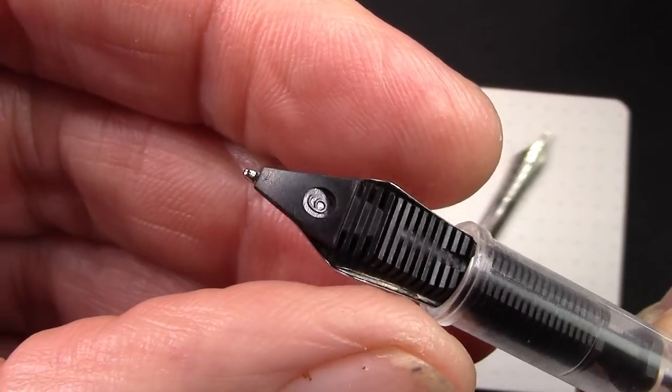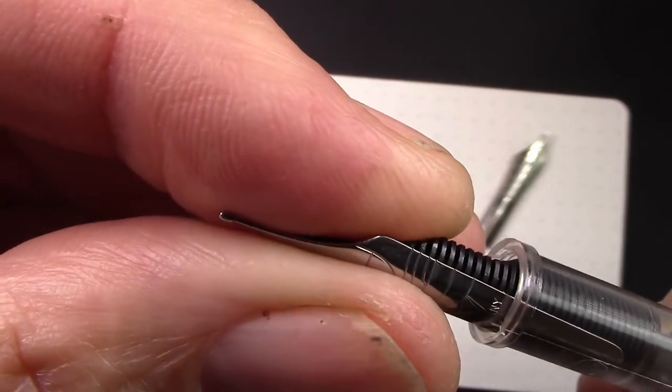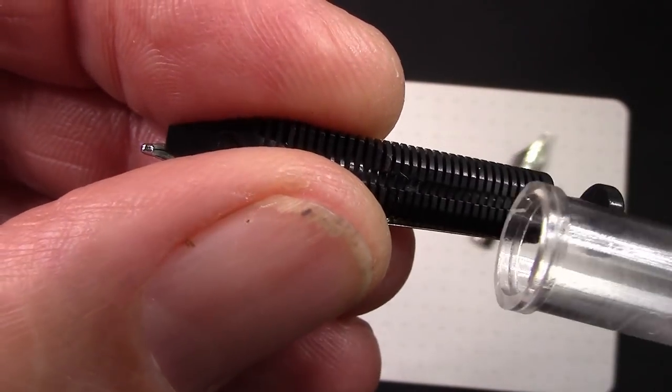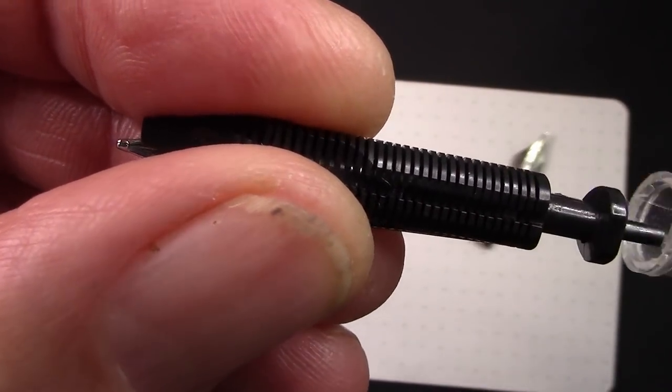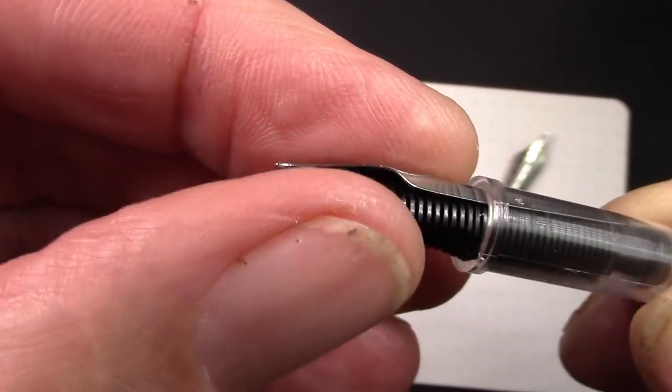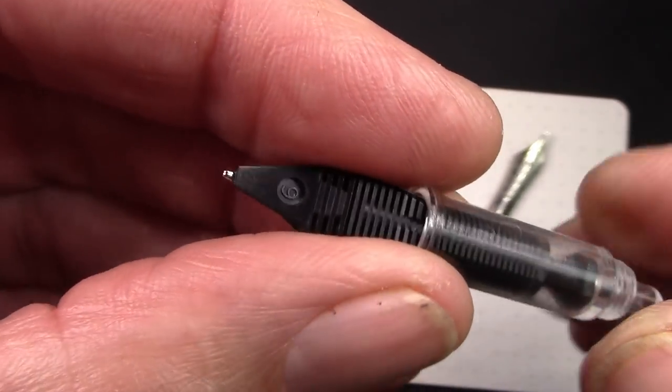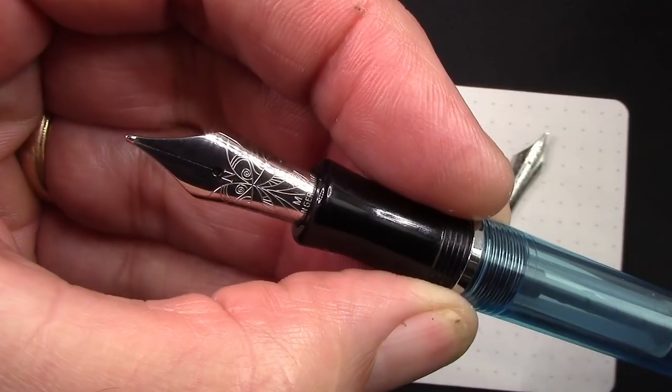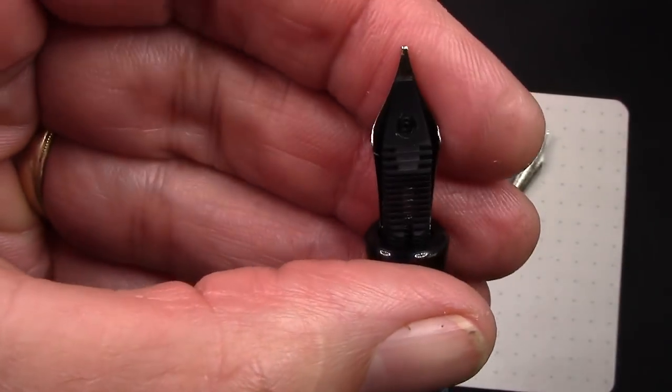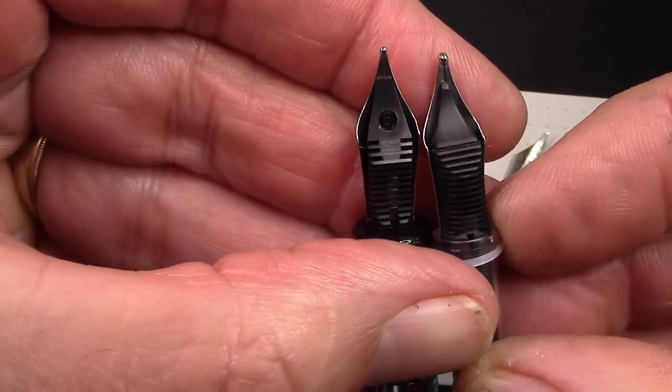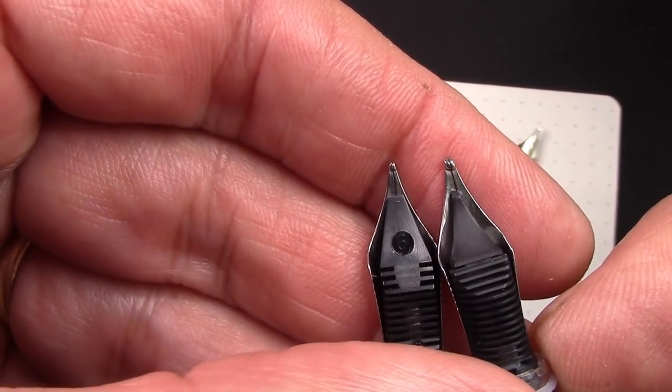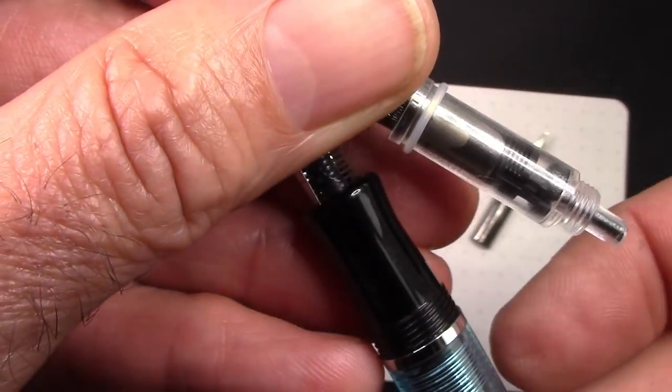You may ask if the Nemosine feed would fit into the PenBBS nib assembly, and the answer is no, because this feed is not as wide so you don't have a good tight fit. As you can see, the nib is just really loose in there. That's not an option, we need to use the feed from the PenBBS. Here's a Nemosine Singularity. If we look at the way the feed and nib work, they're very similar.